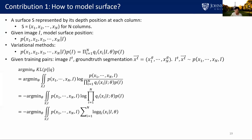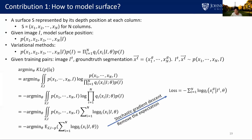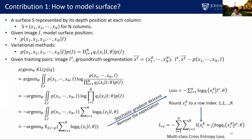We put the product outside of the log and obtain the final training loss equation. This expectation term can be removed using stochastic gradient descent, where we use a single data sample to optimize. If we round xig, the ground-truth surface depth position, to integers between row index 1 to r, we can convert the equation to a standard multi-class cross-entropy loss summed over n columns. This means we want the network to select one row index on each column for the surfaces — a classification problem with r classes.